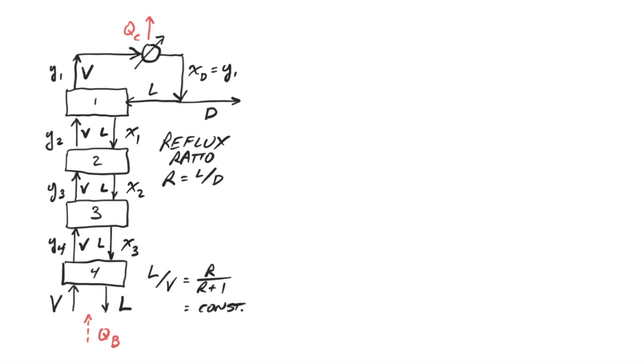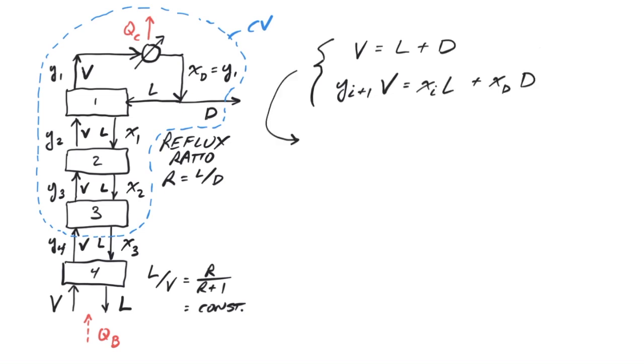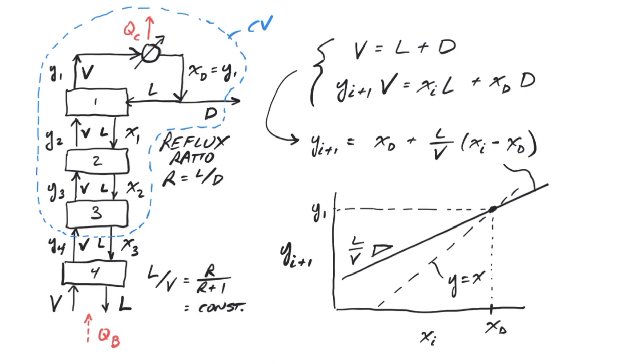Meanwhile, under the assumption of constant L over V, we can perform a material balance around the condenser and any number of stages in the upper portion of the column, resulting in a relationship between the molar concentration of the gas entering each stage, yi plus 1, and the molar concentration of the liquid exiting that stage, xi. This relationship corresponds to a straight line on the y-x diagram with slope L over V that intersects y equals x at a mole fraction corresponding to the distillate concentration, xd.